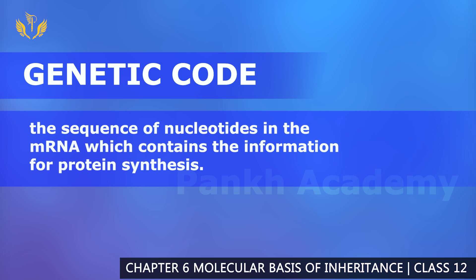So what is genetic code? It is a sequence of nucleotides or nitrogenous bases in the mRNA which contains the information for protein synthesis. The information about how to do protein synthesis is stored in the form of codes — ATGC or AUGC — and these codes are always present in groups of three.